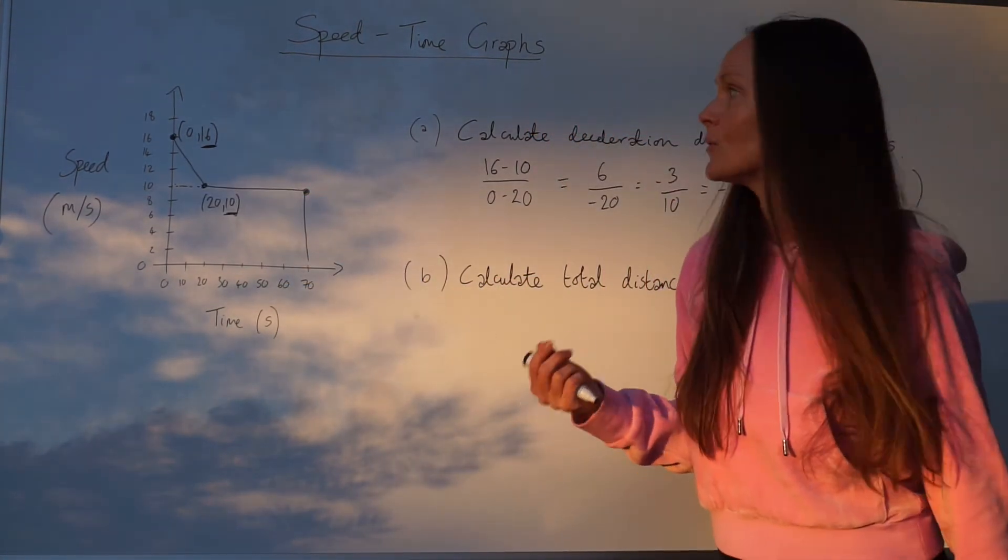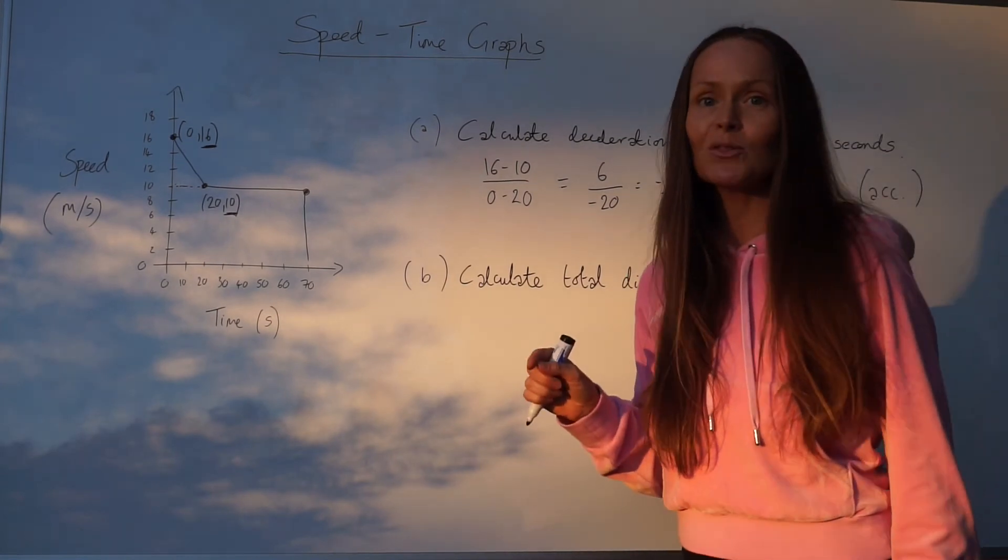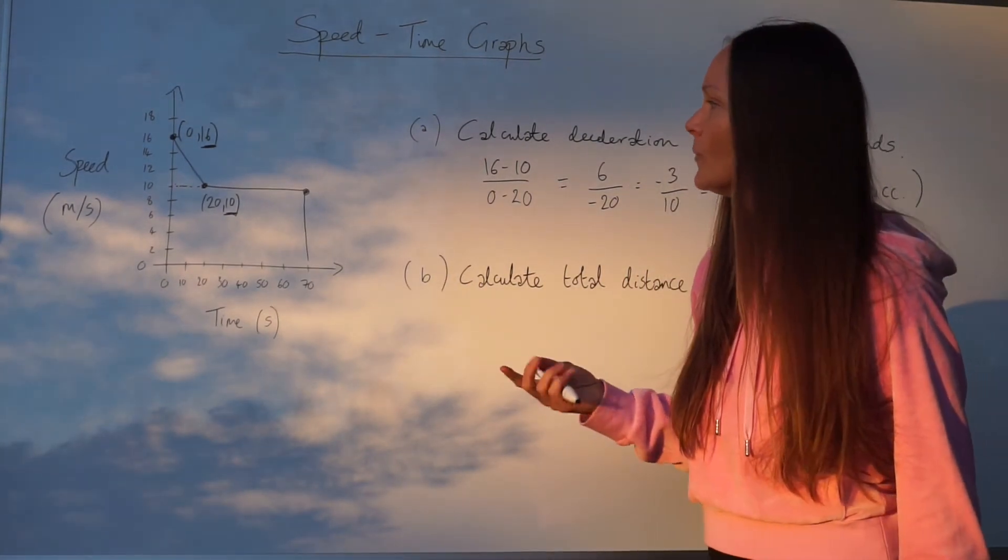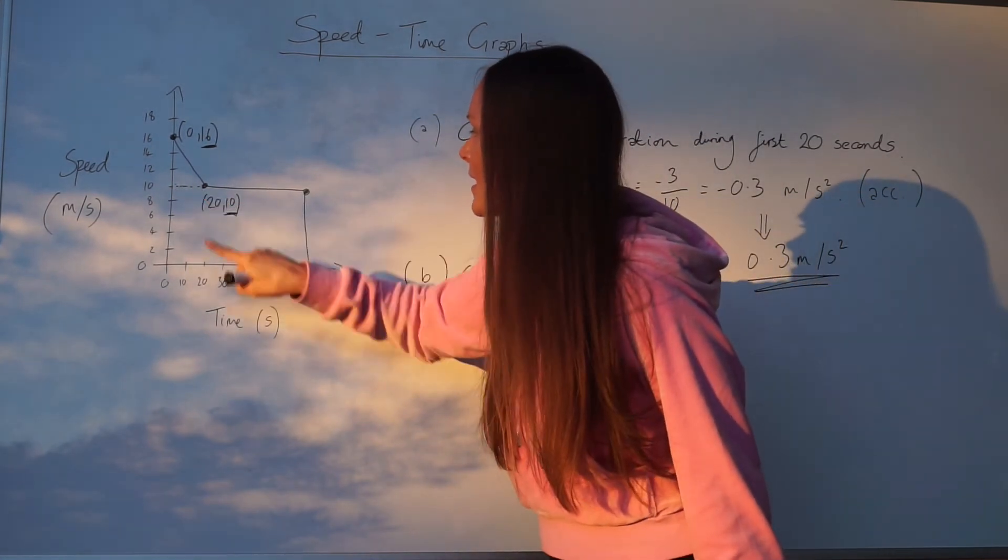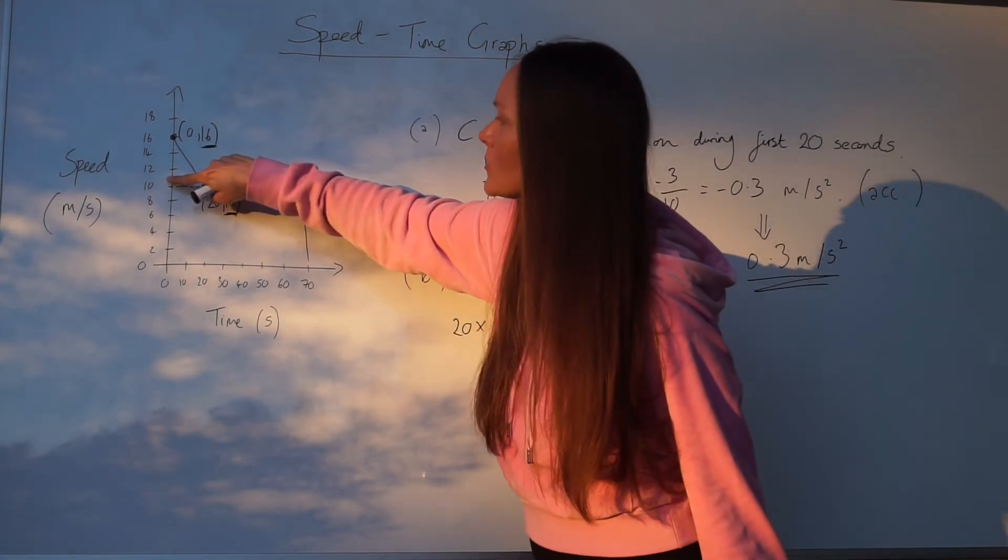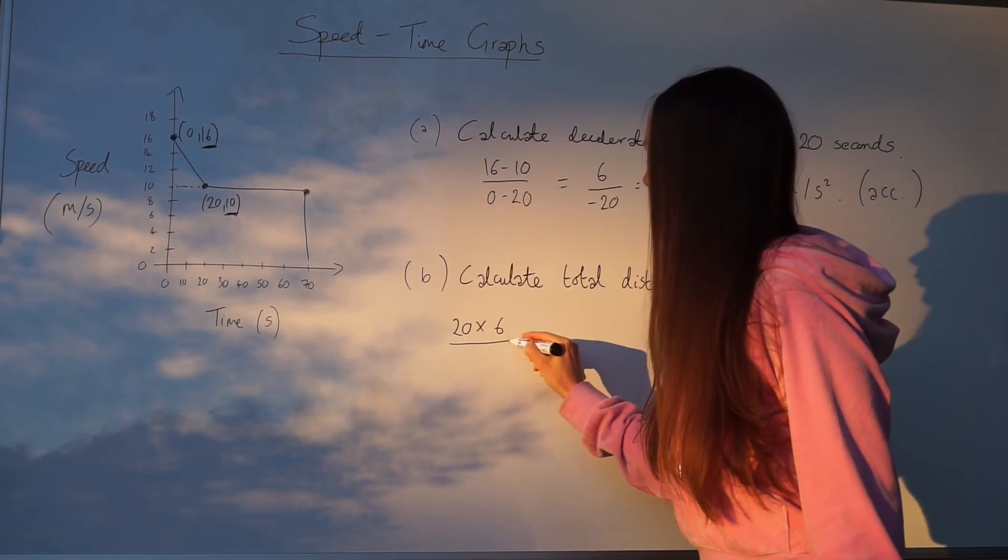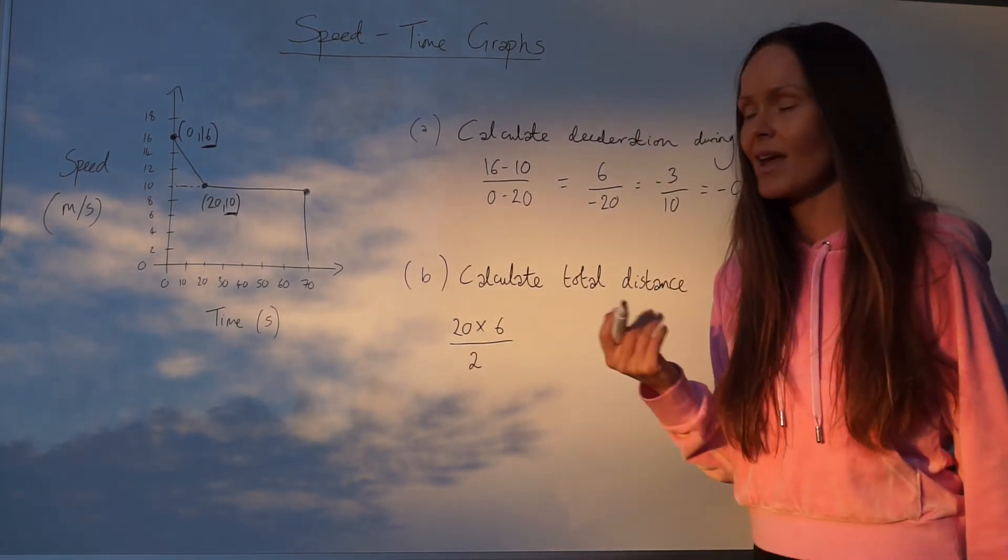I'm going to work out the area of the triangle first. So area of a triangle is base multiplied by height divided by 2. This base is 20, and the height of this triangle goes from 10 to 16, so it's 6. And then always divide by 2 if it's the area of a triangle.